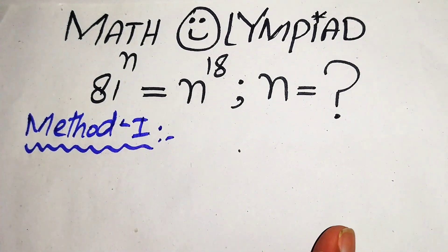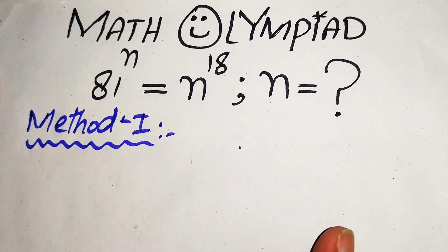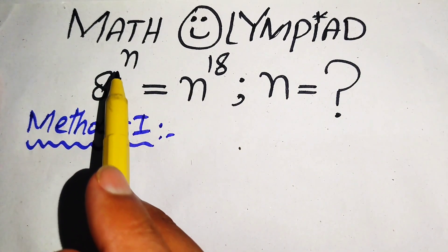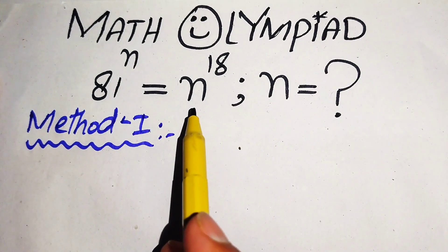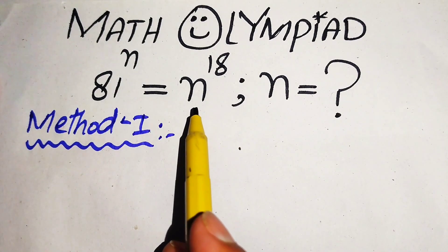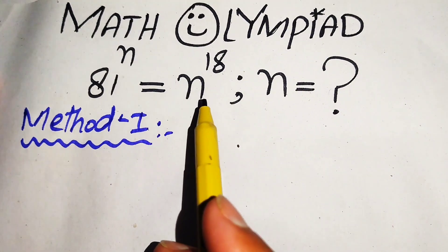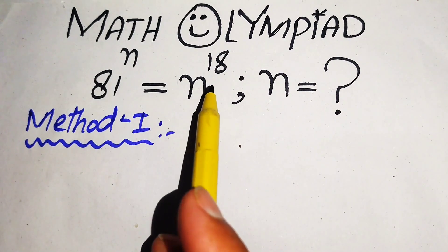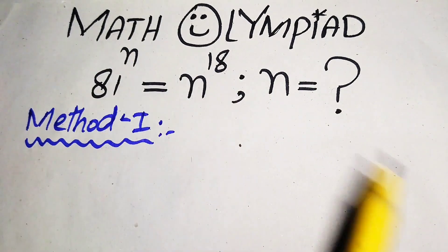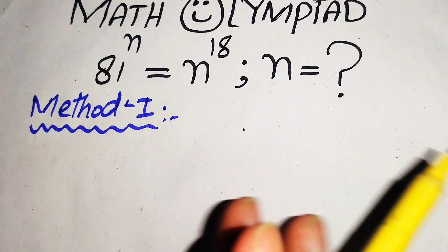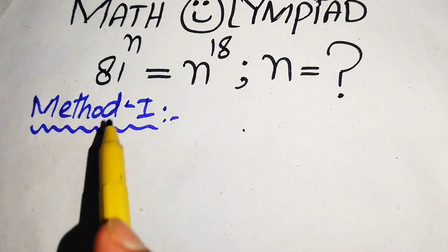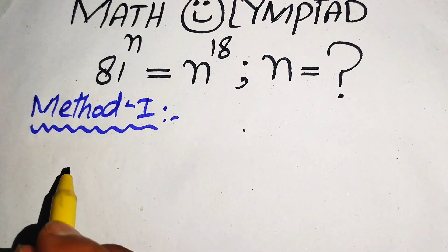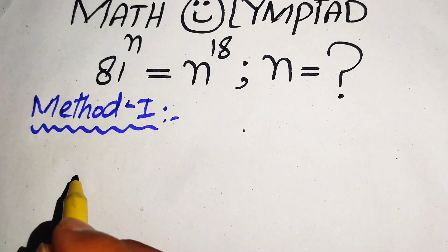In method number one, we take the variable term n to one side and move the other constant term to the other side. We move n to the right hand side and 18 to the left hand side. In order to move n to the right hand side, we need to take the nth root on both sides.